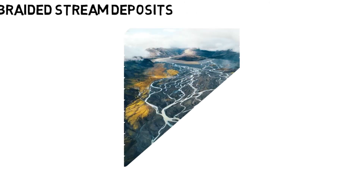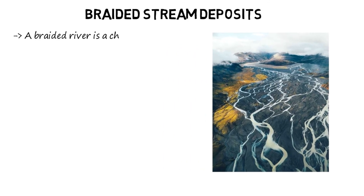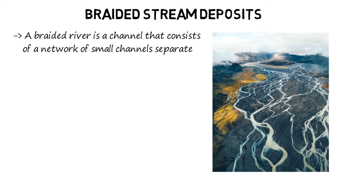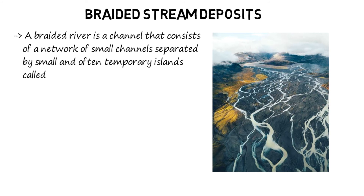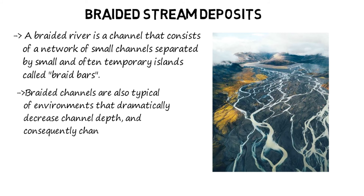Braided stream deposits. Braided streams occur in rivers with high slope and/or large sediment load. Braided channels are also typical of environments that dramatically decrease channel depth and consequently channel velocity.